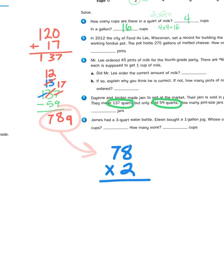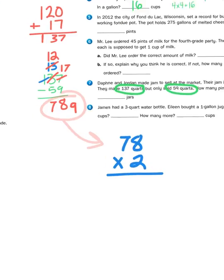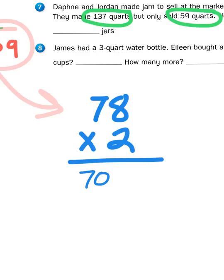Now 78 times 2, let's use partial products to solve that. I'm going to take 70 and multiply it by 2, and then I'm going to take 8 and multiply it by 2.